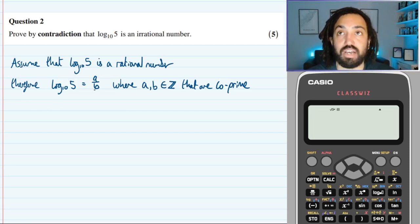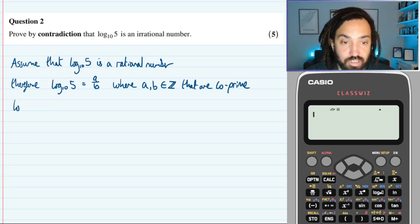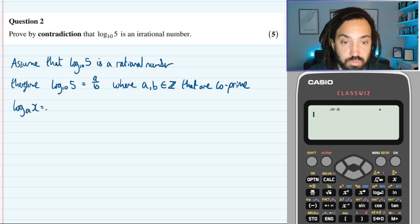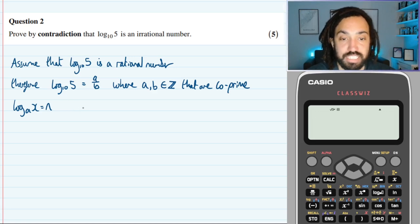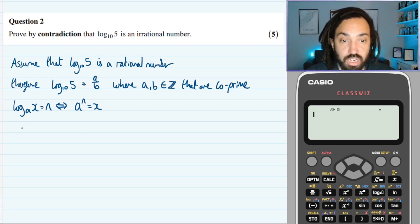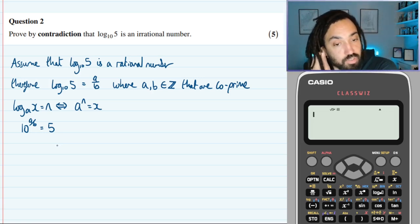Okay, now let's write this now as an indice, because we know that if we have log base a of x is equal to n, then that is exactly the same as saying that a to the n is equal to x. These two statements are identical. So what that means is that I can write that 10 to the power of a over b is equal to 5, just by following that identity of a logarithm.